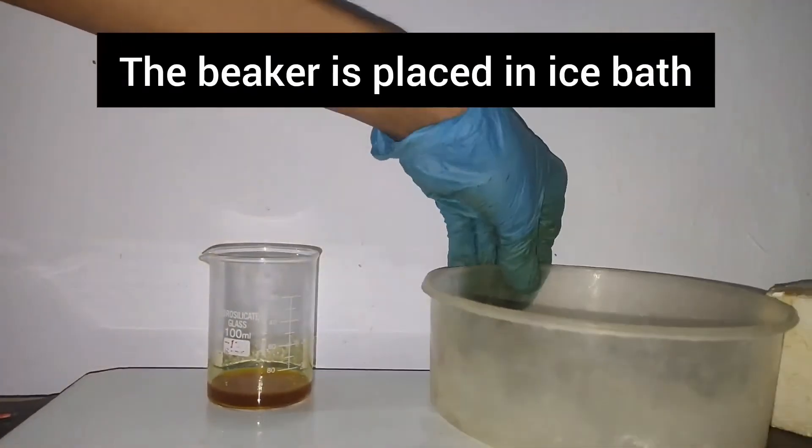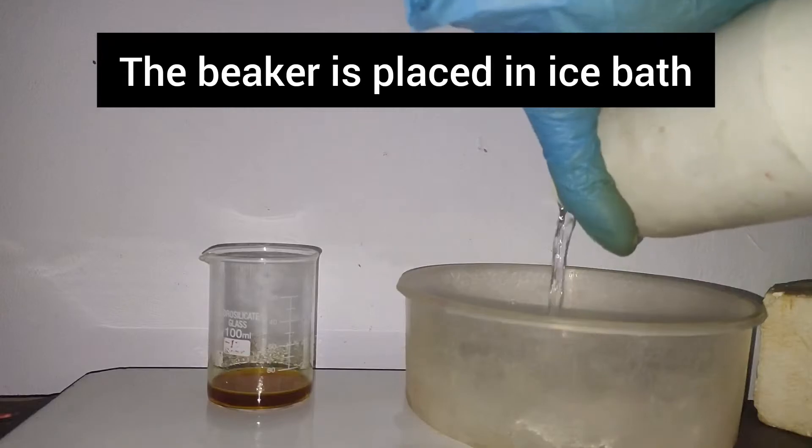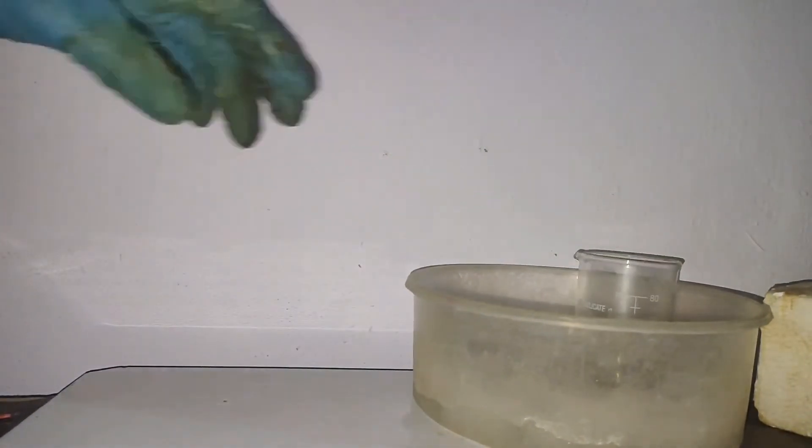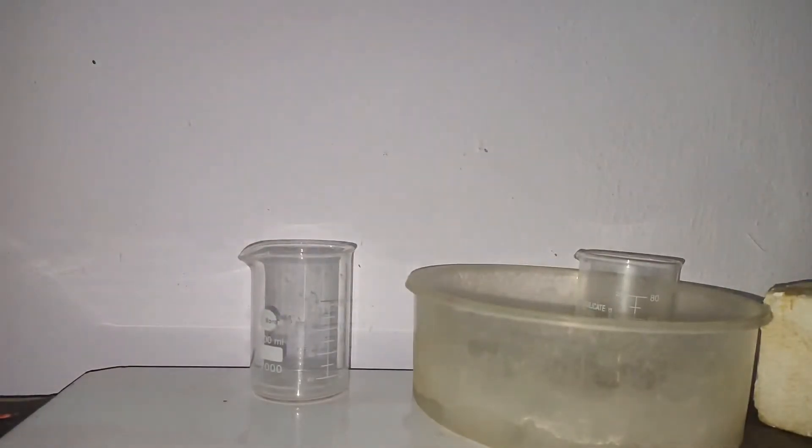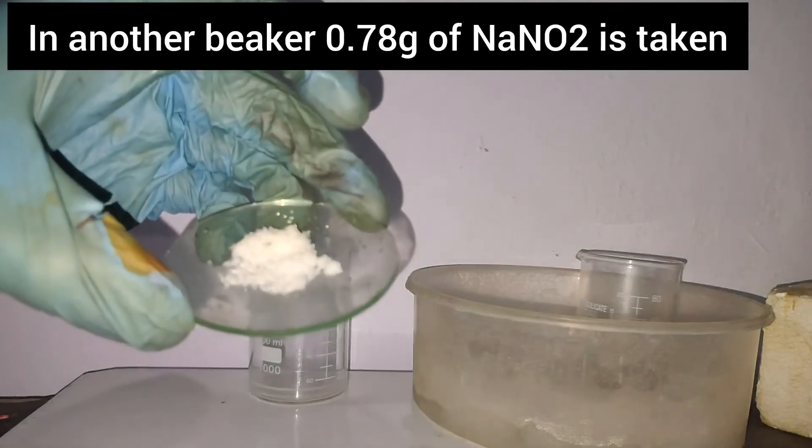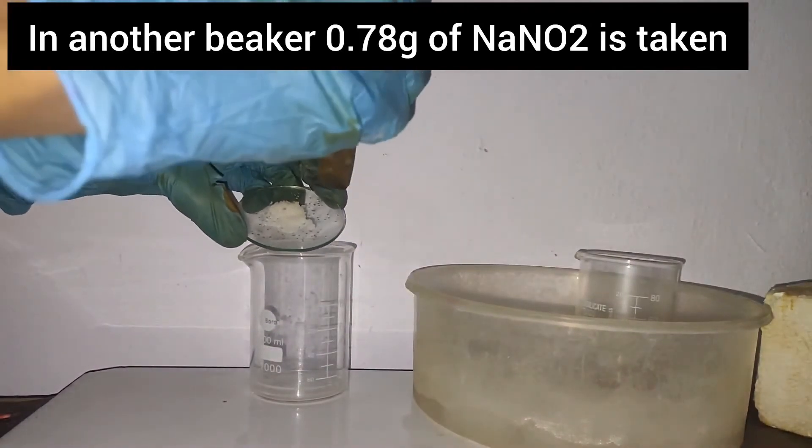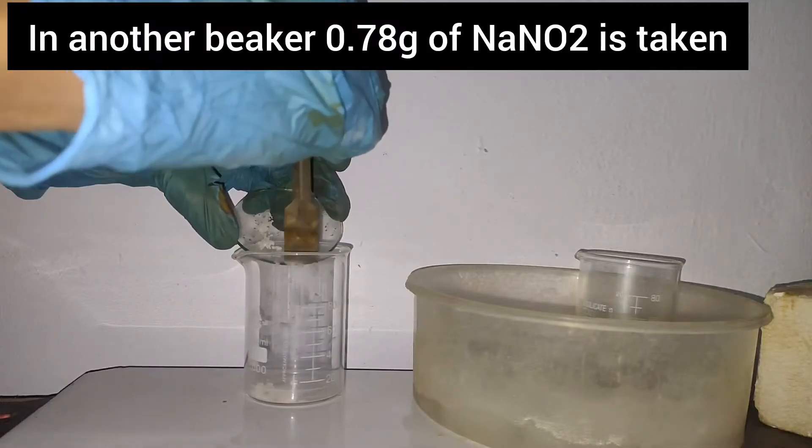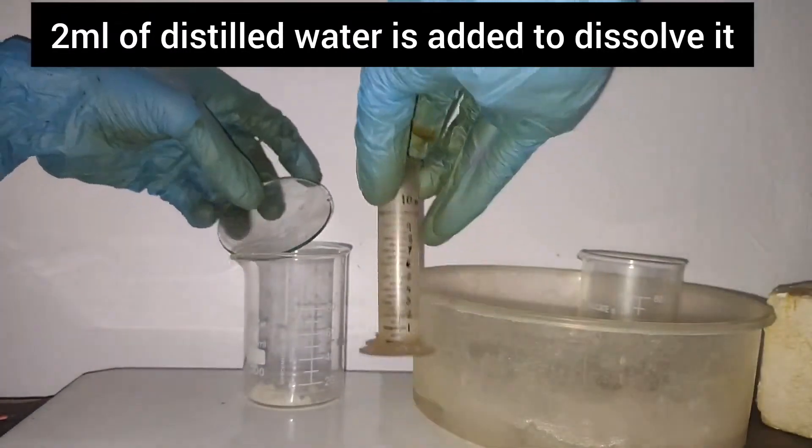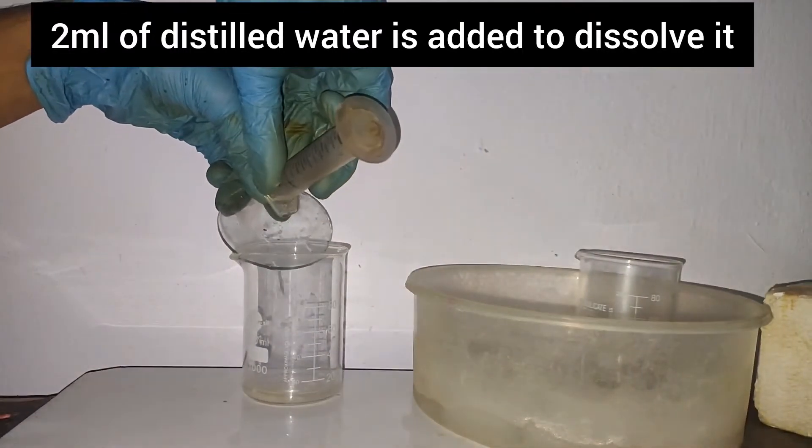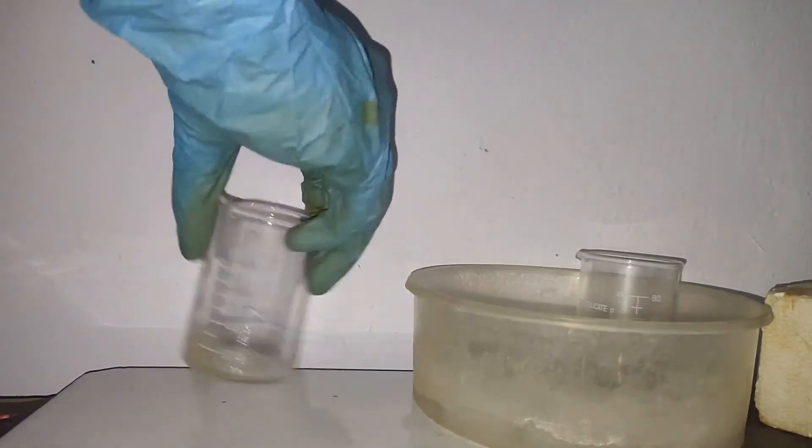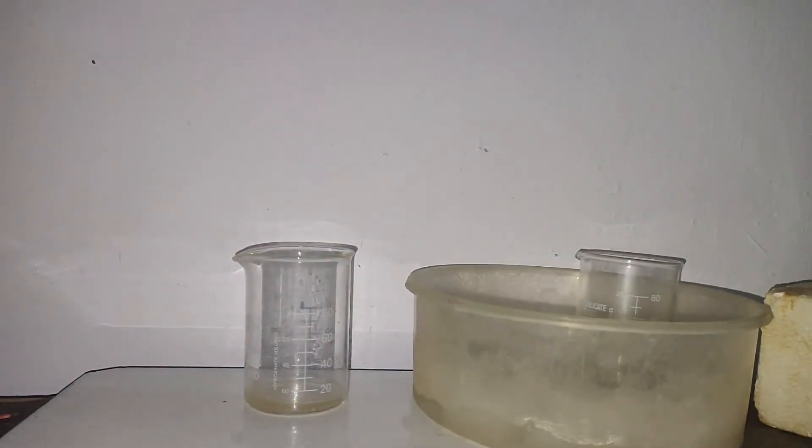This beaker was placed in an ice bath. In a second beaker, 0.78 g of sodium nitrite was taken and dissolved in 2 ml of distilled water. After dissolving, this beaker was also placed in an ice bath.